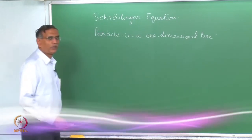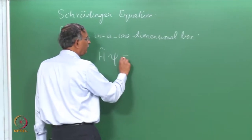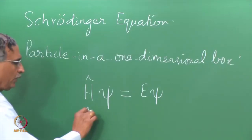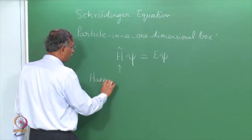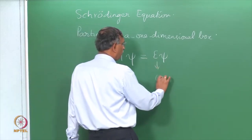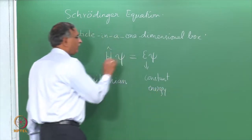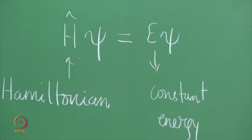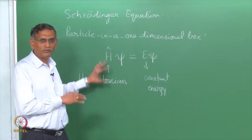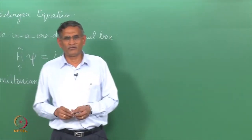Let us take a quick look at the Schrödinger equation. In the lecture earlier, I mentioned that I would be talking about the time-independent Schrödinger equation, in which this quantity is referred to as the Hamiltonian and this as a constant with dimensions of energy. The function psi is the function that we wanted to find by solving this equation, but we have to introduce how this equation comes about or what its origin is.